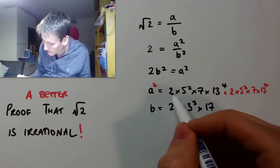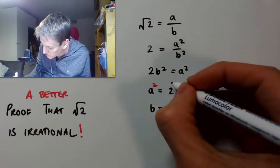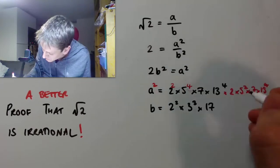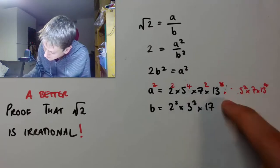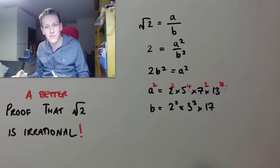By doing 2 times 2 is 2 squared, 5 squared times 5 squared is 5 to the 4. And then I've got 7 squared, and I've got 13 to the power of 8. So, you can see that all of the powers in this prime decomposition have to double.